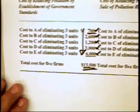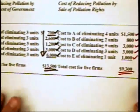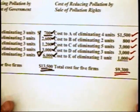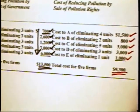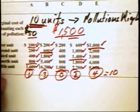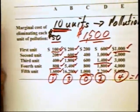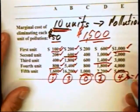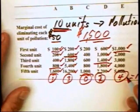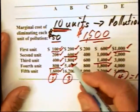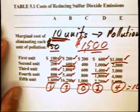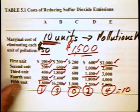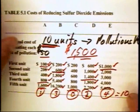Selling rights to pollute is more cost effective, simply because the more cost-effective polluters are doing the cleanup. Just as we want the most cost-effective producers making bicycles, here we want the most cost-effective polluters producing the pollution abatement — and that's what you get.